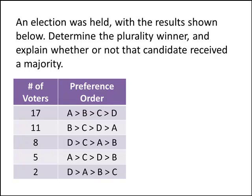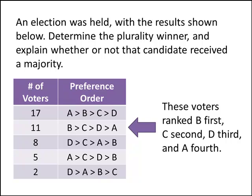So how do we interpret this information? Let's remember how to read a voter profile. In this row of the table, we have voters who ranked B in first place, C in second place, D in third place, and A in fourth place. But for plurality elections, all we care about are first place votes, so we're essentially going to ignore the rest of that preference order and just pay attention to which candidate got ranked in first place.